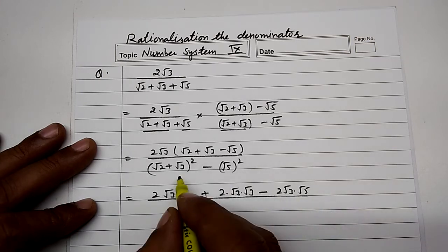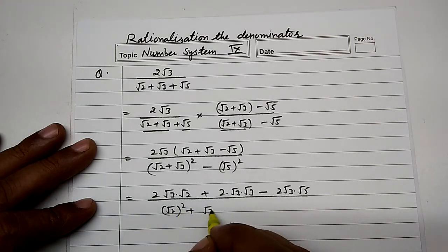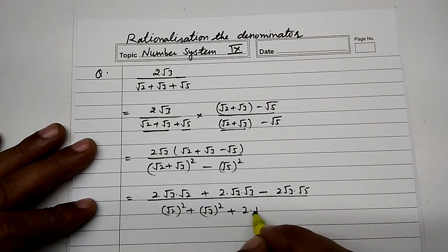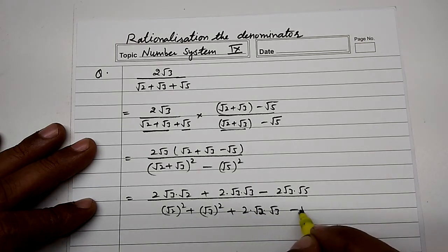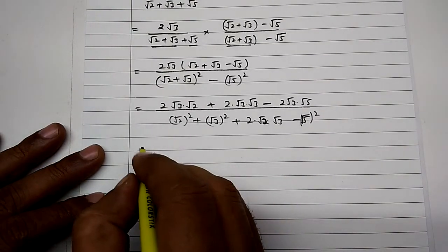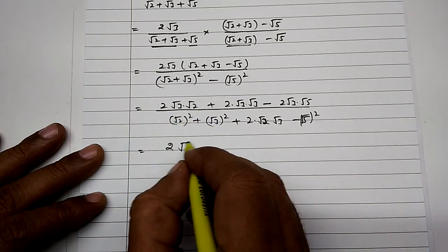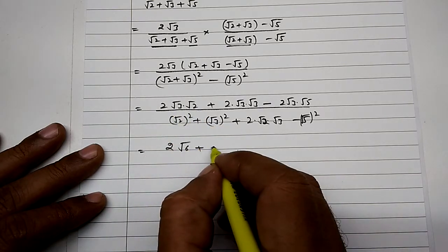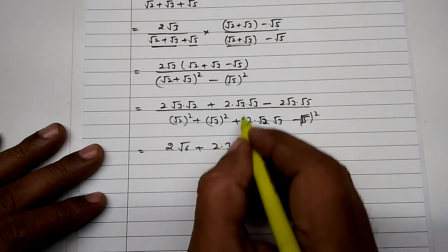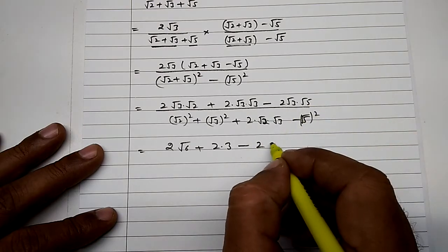For the denominator, (a + b) whole squared equals a squared plus b squared plus 2ab. So (√2 + √3) squared equals 2 + 3 + 2√6. That gives us 5 + 2√6 in the denominator. Then subtracting (√5) squared which is 5, the denominator becomes 2√6.